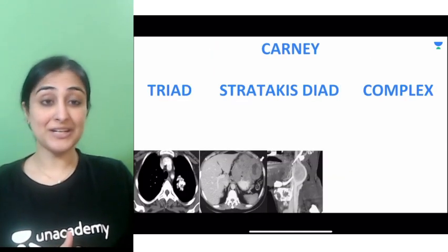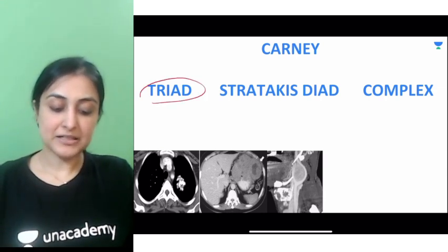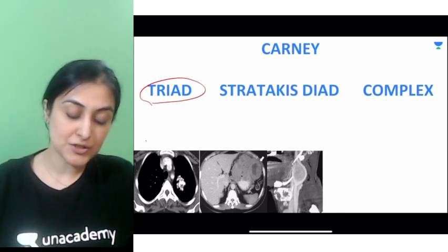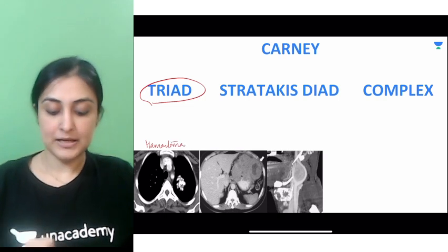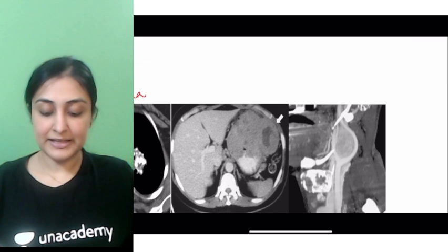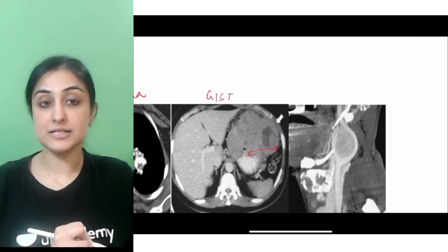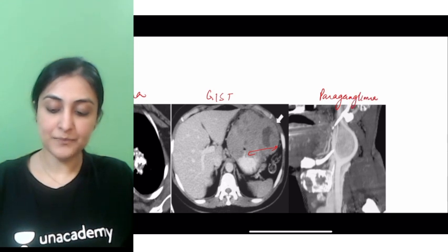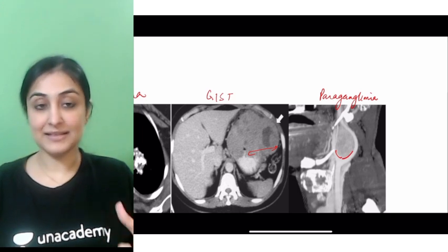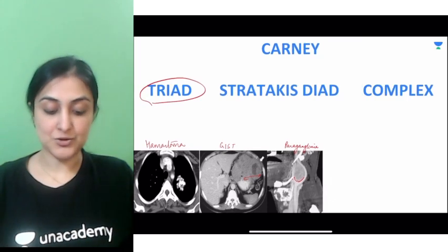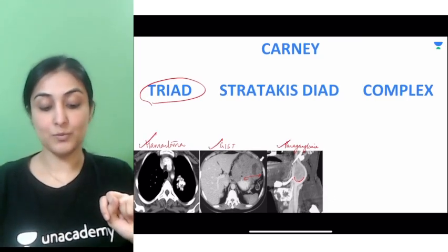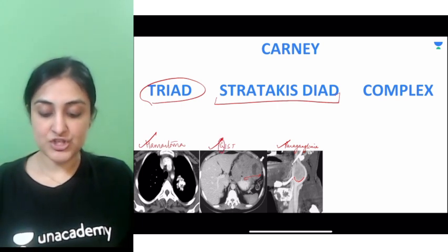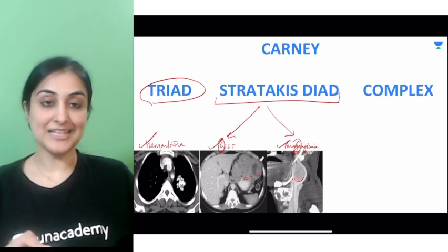Moving on to Carney — very, very important. The Carney triad consists of: in the lung, a popcorn lesion — a well-defined lesion with calcification, which is the pulmonary chondroma; in the stomach, a very aneurysmal wall thickening with central necrosis, which is a gastrointestinal stromal tumour (GIST); and a carotid body tumour, also called a paraganglioma — an extra-adrenal pheochromocytoma situated at the carotid bodies splaying the ICA and ECA. So the triad is: chondroma, GIST, paraganglioma. The Carney-Stratakis dyad includes only GIST and paraganglioma — remember the things with a G.